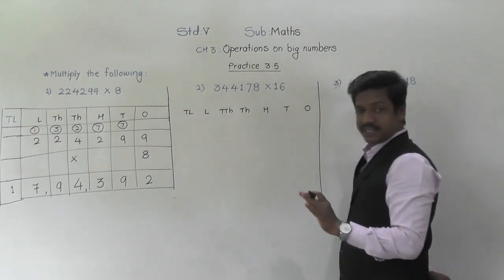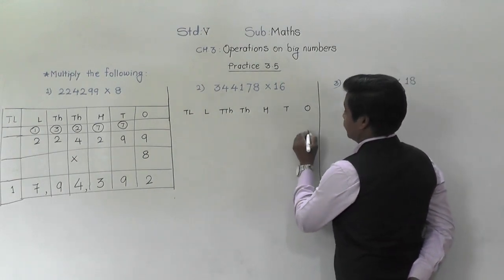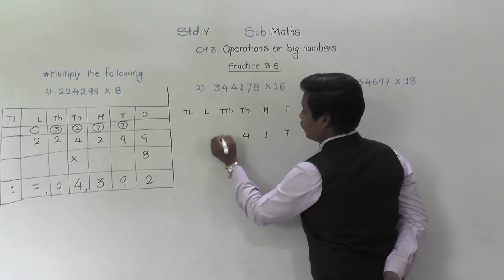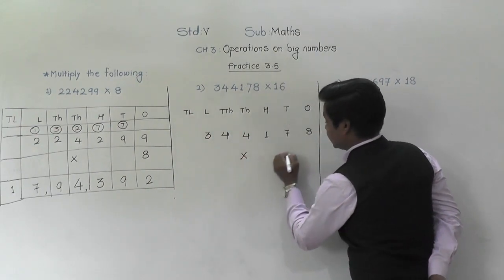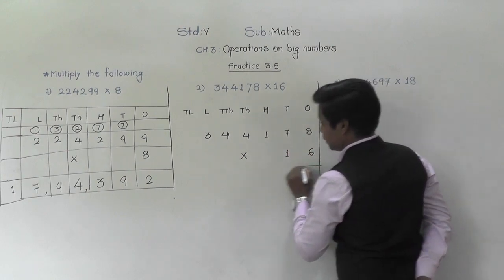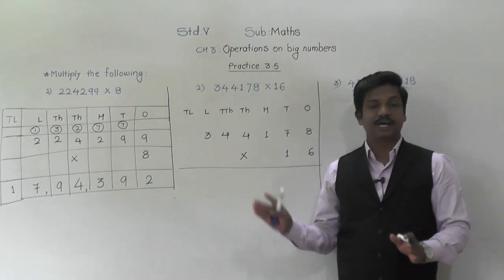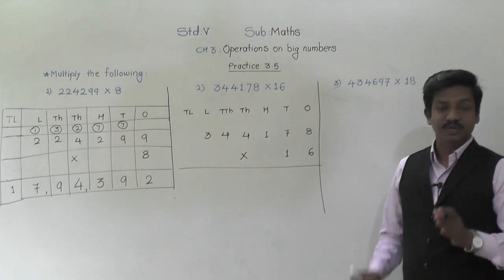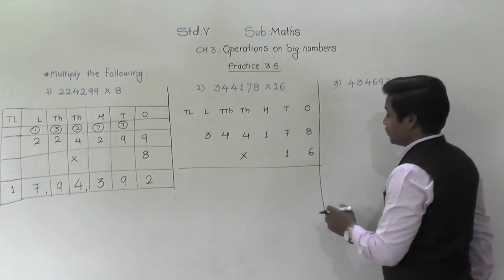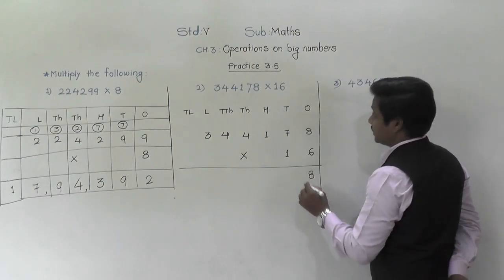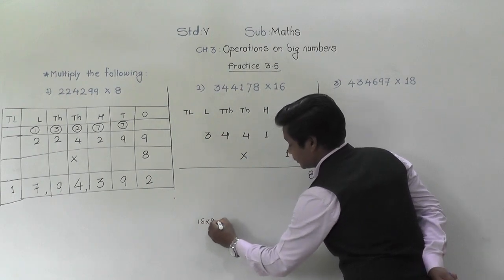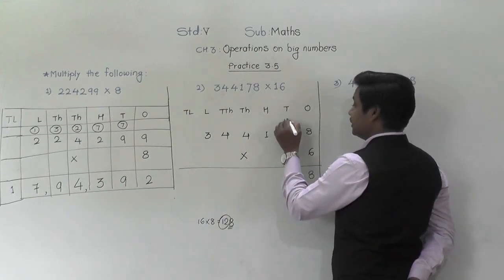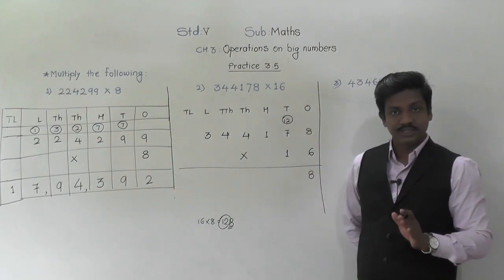So 3,44,178 into 16. Here also, if you know the table of 16, you can multiply directly. 16 eights are 128 — so 8 will come down and 12 will be carried to the tens place. Then 16 sevens are 112. 112 plus 12 carried is 124 — so 4 will come down and 12 will be carried to the hundreds place.